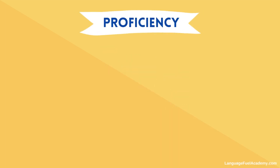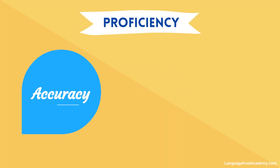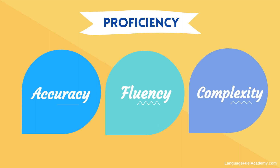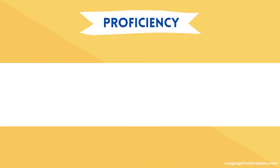We look at the proficiency triad of accuracy, fluency, and complexity, and illustrate how they work together in language learning.